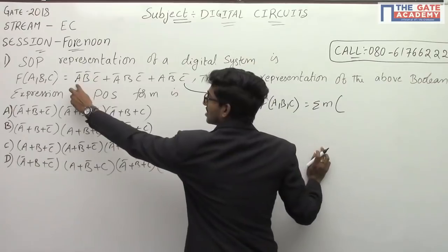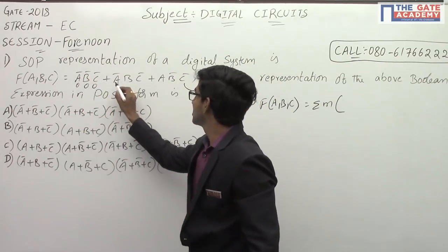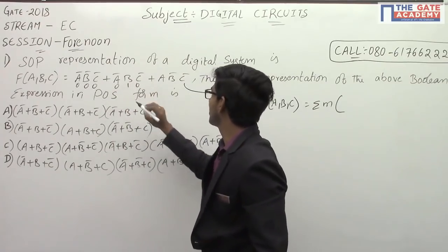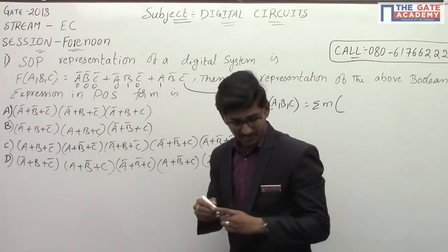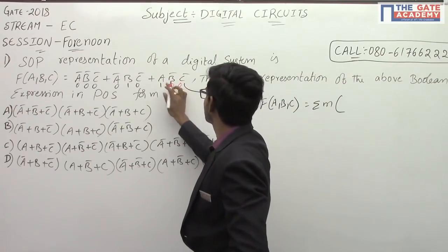From this: A̅B̅C̅ is 0,0,0. The next term is 0,1,0. The third term is 1,0,0.